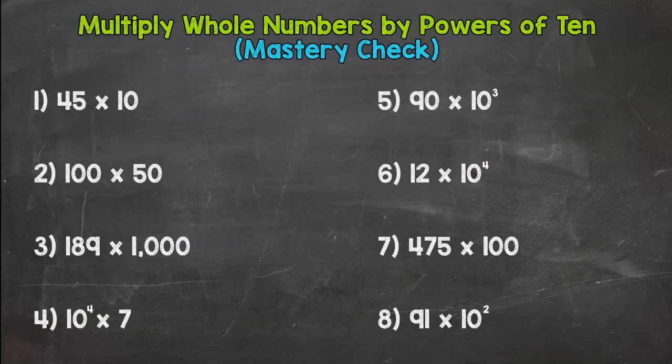So 45 times 10. Remember, we check for how many zeros are in our power of 10 or the exponent, and that's how many zeros we use to push everything to the correct place value. So we have 45 with one zero on the end, 450 for number one.